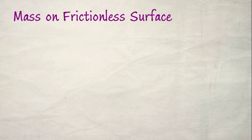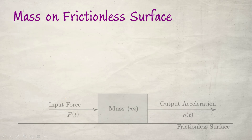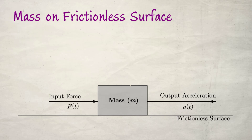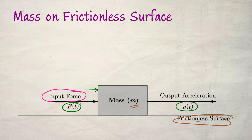Some of these examples are very simple, like mass on a frictionless surface, and we also have some complex examples. Here we can see that a mass M is on a frictionless surface. We can apply an input force F of T. As we have already studied in high school, if you apply a force to this mass on a frictionless surface, it will create an output acceleration A of T. Even this simple mass is an example of a system — the input force is the input signal, the output acceleration is the output signal, and the system is the mass.